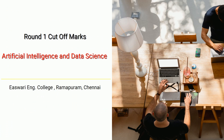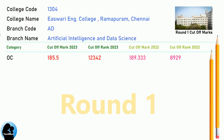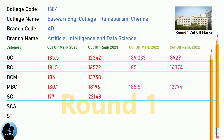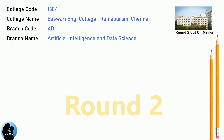DNA Round 1 Cut-Off for Eshwari Engineering College in Artificial Intelligence and Data Science. DNA Round 2 Cut-Off for Eshwari Engineering College in Artificial Intelligence and Data Science.